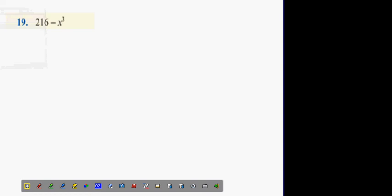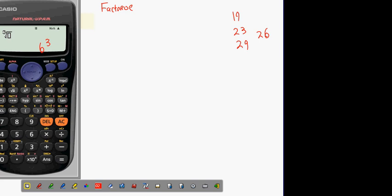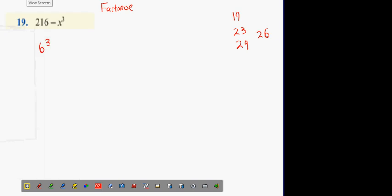I have to factorize this. Now, the way I recognize this question is this is a factorized question. So far I've done 19, 23, 29, 26. Now, what I do here is I recognize that 216 is a cube root question. 6 cubed. If I didn't know that, what I could obviously do is I could go to my calculator, press the shift cube root button and then put in 216. And then you get 6.